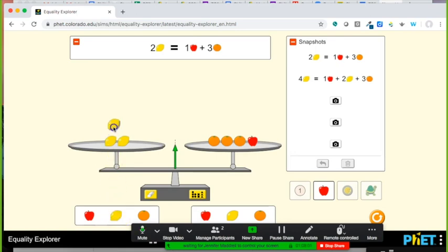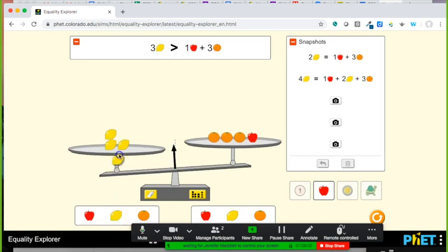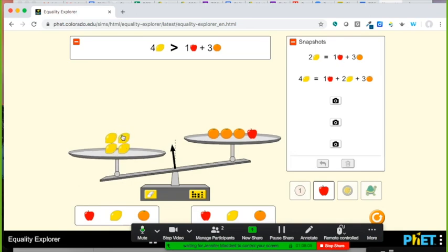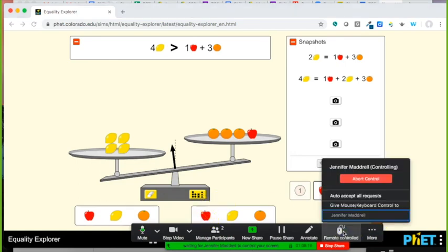What if I double the number of lemons on one side? So we've doubled the amount of fruit on the left hand side. Can anyone balance this out on the right hand side without using lemons? And again, I would ask students to volunteer.